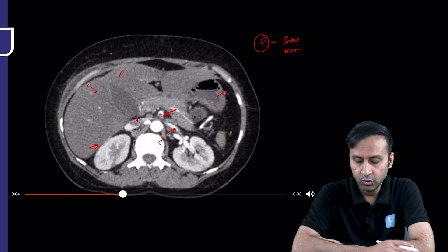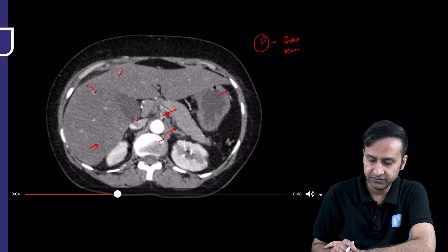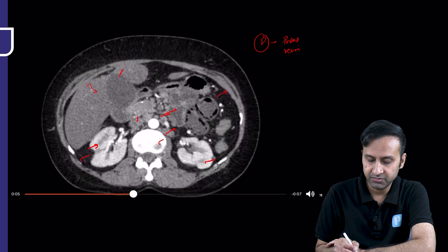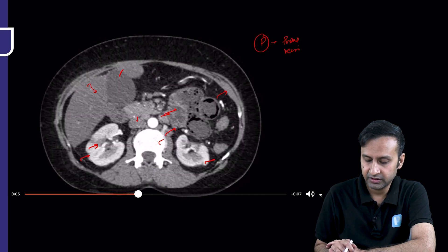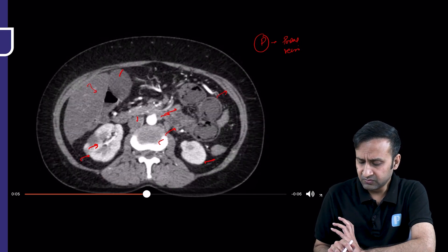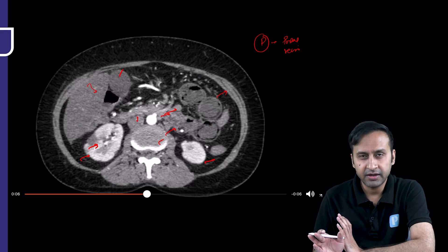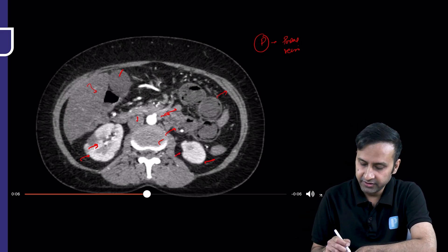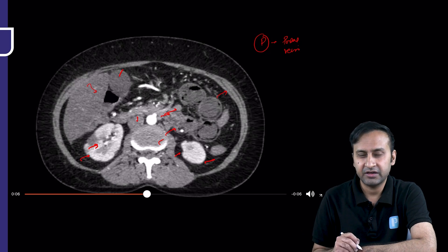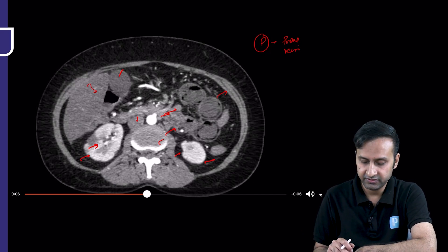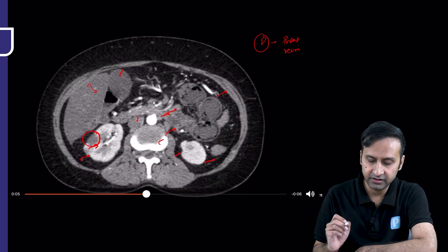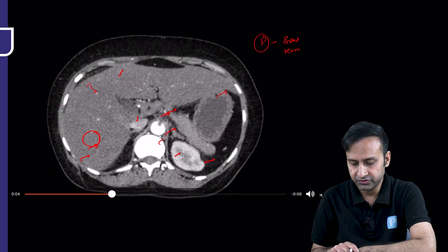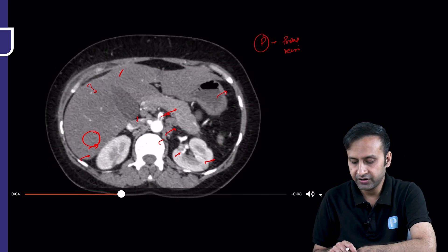One more clue: look at the kidneys — they are showing cortical irregularity suggesting infarcts. We had multiple infarcts in the kidneys as well, indicating multi-system involvement at various stages. Renal scars indicate chronic disease, while the acute renal infarcts visible here indicate an acute pathology. Combined with the emboli in the celiac artery and SMA, we have both chronic and acute disease processes.